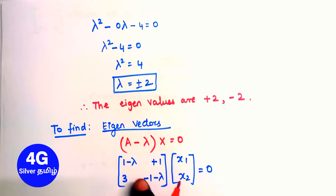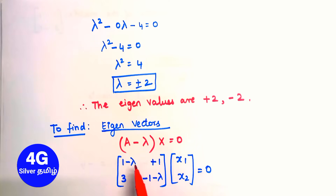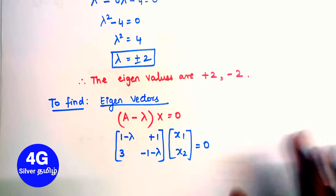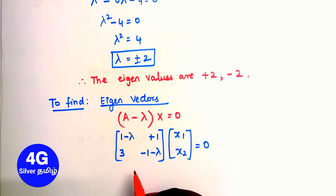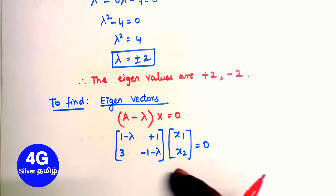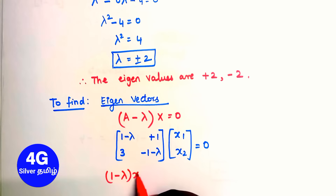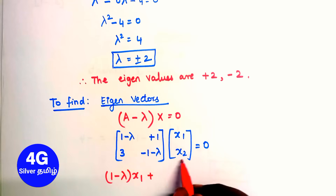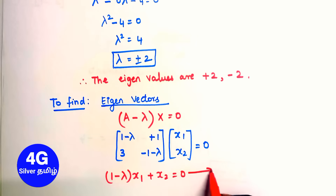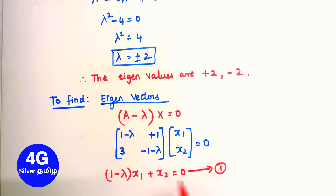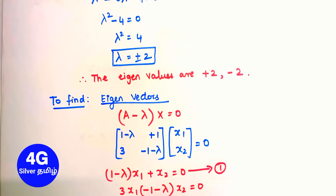Multiplying out, equation 1 is: (1 minus lambda) x1 plus x2 equals 0. Equation 2 is: 3x1 plus (-1 minus lambda) x2 equals 0. We will solve these two equations for each eigenvalue.